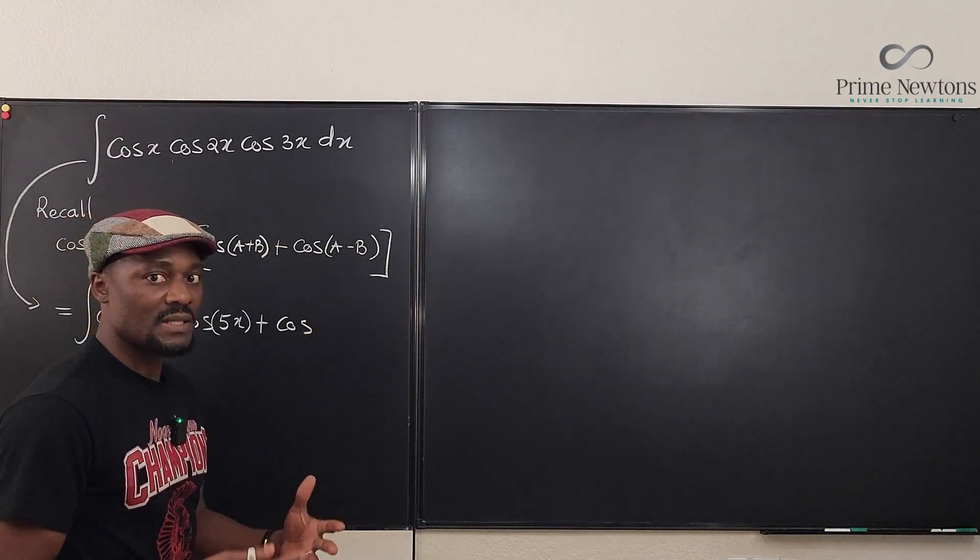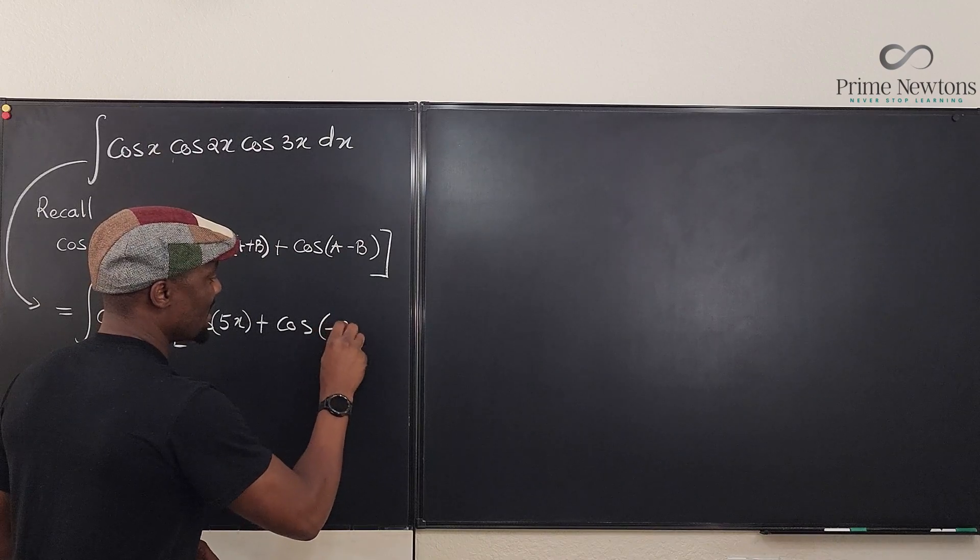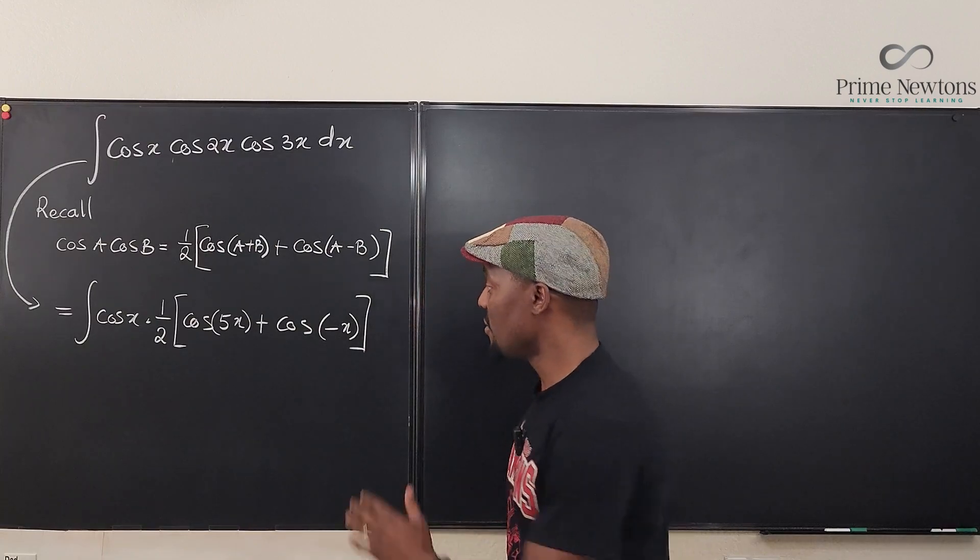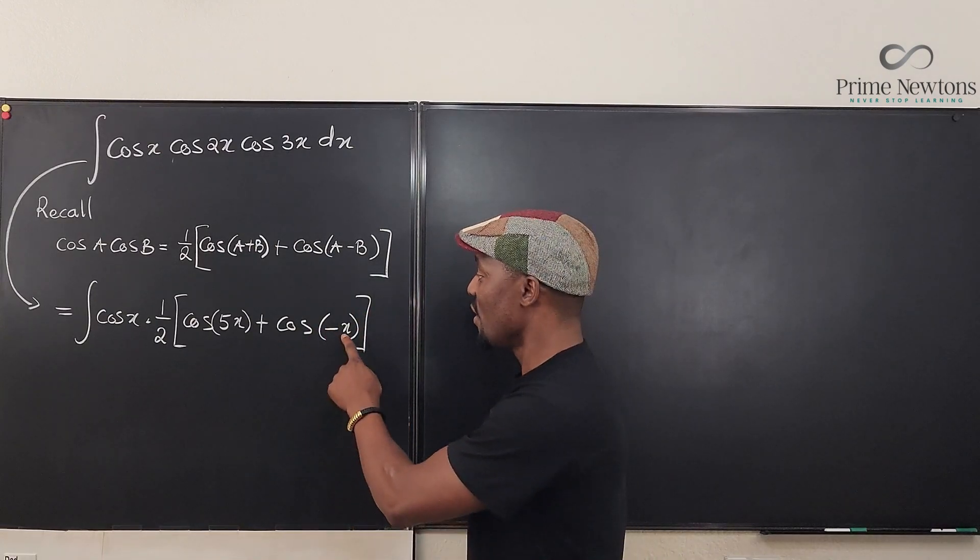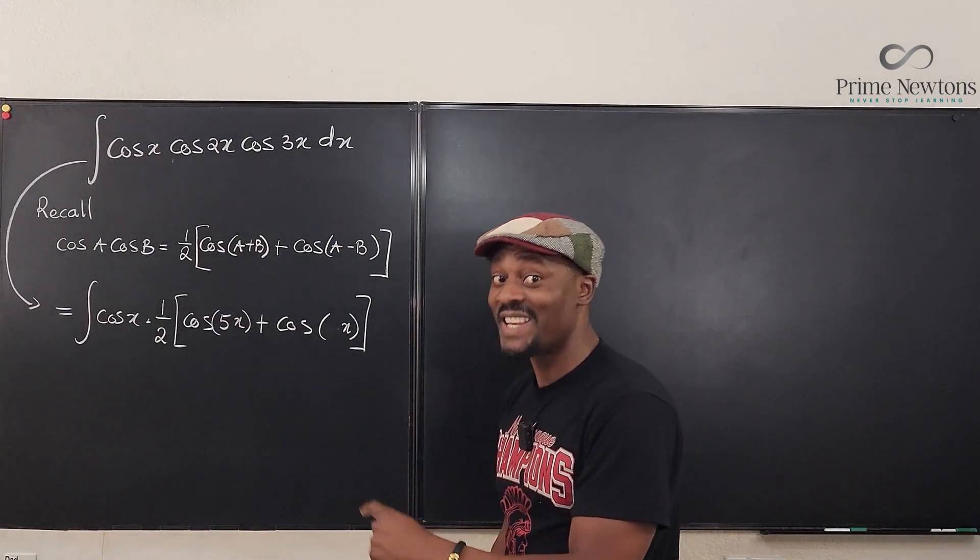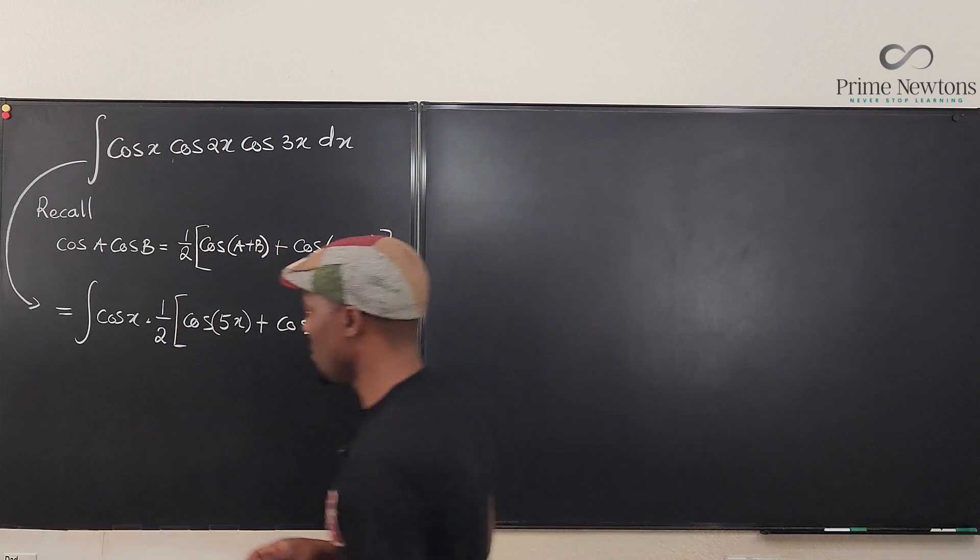Plus cosine 2x minus 3x. It's going to be minus x, but it doesn't matter. Let me just write it. Remember, cosine is an even function, so it does not matter whether it is x or minus x. So you can actually just leave this as x because cosine is an even function. Don't do it for sine. Remember. So here we go.